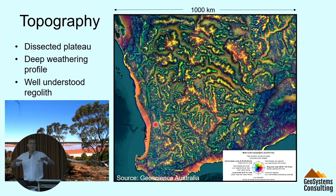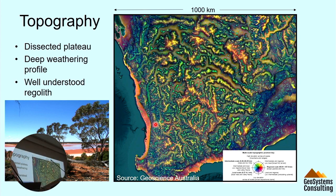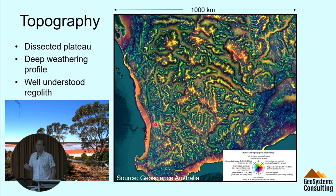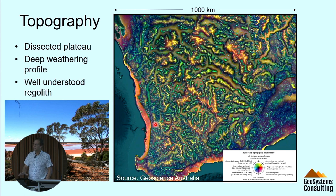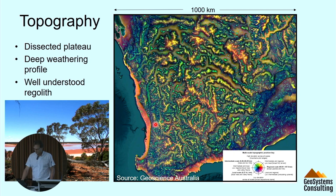I'm going to look at a series of horizontal slices from the surface right down into the mantle and into the plate. We've got a dissected plateau, deep weathering profile, but not a huge amount of cover over much of the Yilgarn. A well understood regolith — the CRC-LEME did some fantastic work here and CSIRO is doing great work continuing that research. I encourage you to read about regolith evolution.